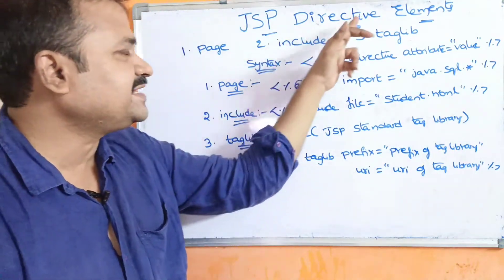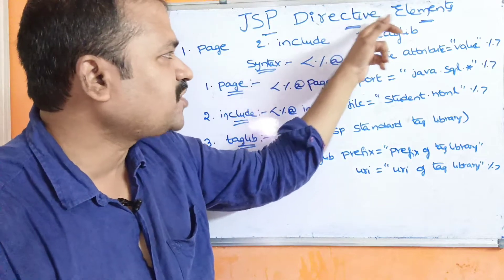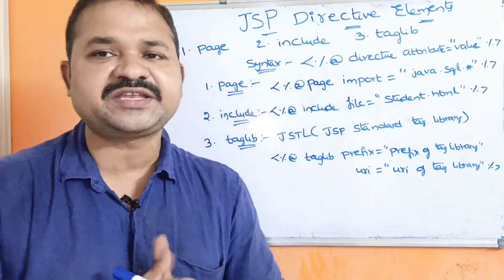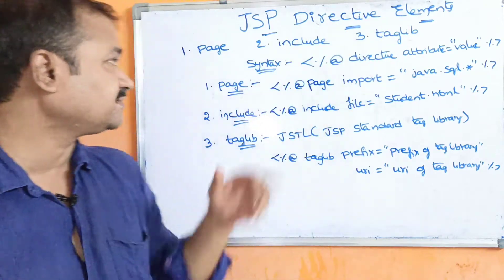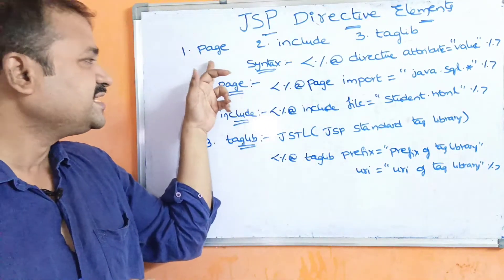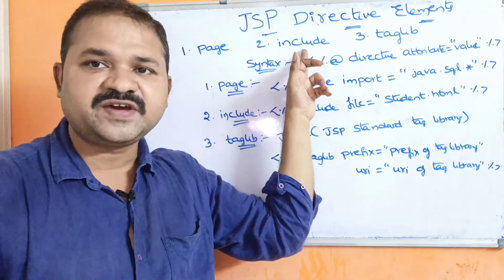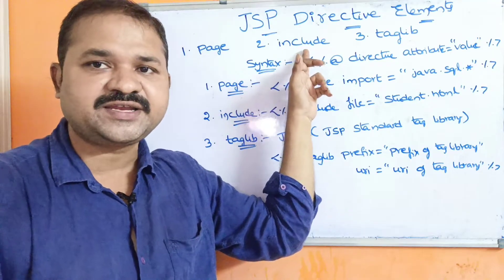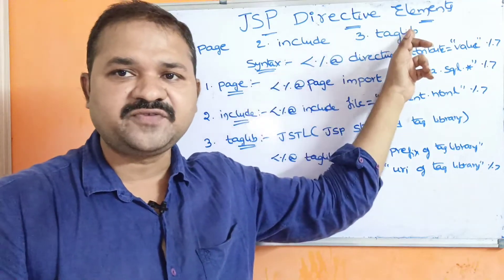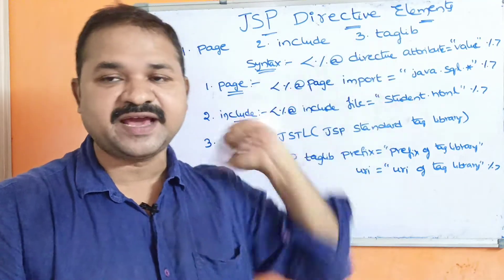Mainly, there are three types of JSP Directive Elements. The first one is page directive. The second one is include directive. The third one is taglib directive.